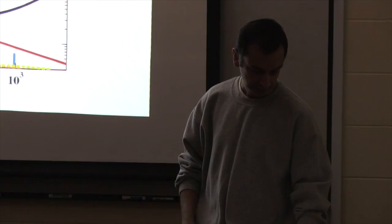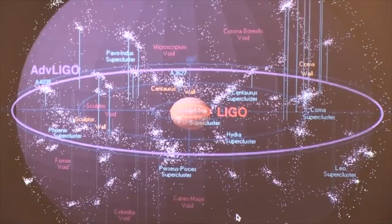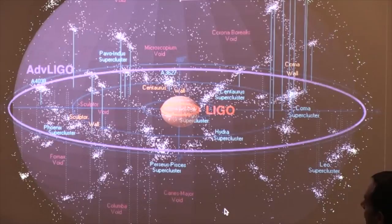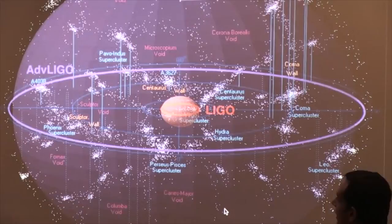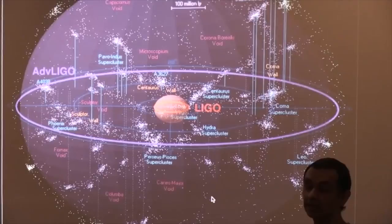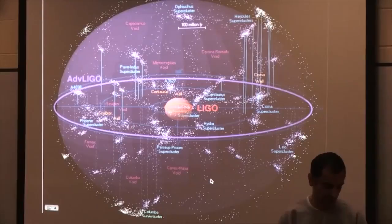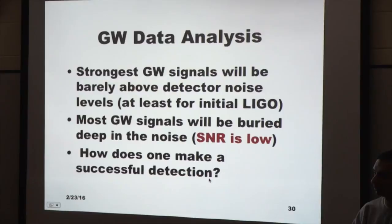The range of LIGO has expanded significantly: the original detector from a decade ago could see maybe a few tens of millions of light-years. The current advanced LIGO can see a little further than a gigalight-year — about a billion light-years away — with a huge part of the sky visible to the detector.